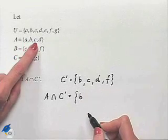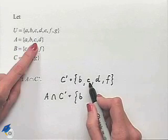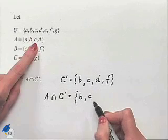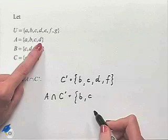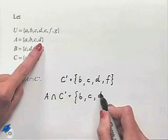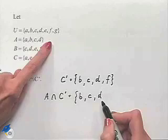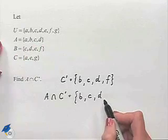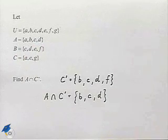Set A has element C in it. That is contained in C complement. It's part of the intersection. Set A has the element D in it. It is part of C complement. That's part of the intersection. And that is going to be all the elements in set A, so therefore that can be all the elements in the intersection of these two sets.